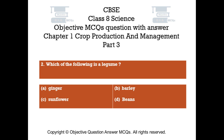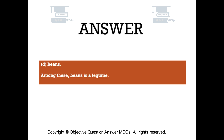Question number 2. Which of the following is a legume? Option A: Ginger. Option B: Barley. Option C: Sunflower. Option D: Beans. The right answer is option D — Beans. Among these, beans is a legume.